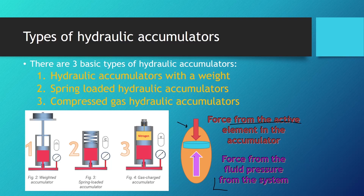When the hydraulic oil pressure falls below a certain point and the force from the active element is larger than the force from the fluid pressure, then this force from the active element pushes out the fluid. This basic classification of hydraulic accumulators is done by the type of the active element inside the accumulator, or more precisely, the way the force is exerted.